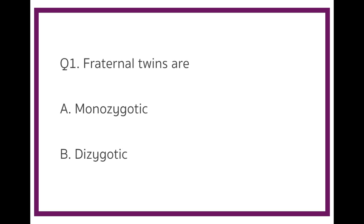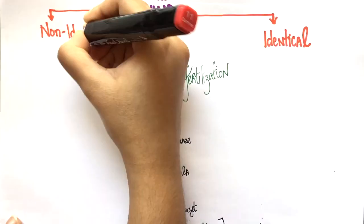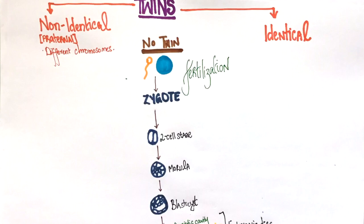The answer to this question is dizygotic. Twins can either be identical or non-identical. Fraternal twins are non-identical. So, they have different sets of chromosomes.